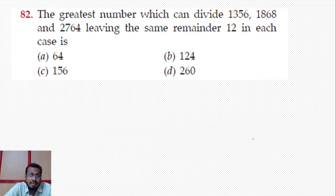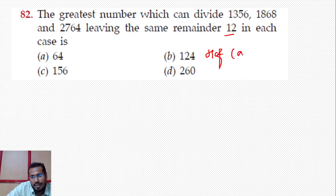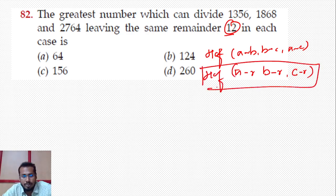Next: The greatest number which can divide 1356, 1868, and 2764 leaving the same remainder 12 in each case. When the remainder is given directly, you can subtract the remainder: (a - remainder), (b - remainder), (c - remainder), then take HCF.